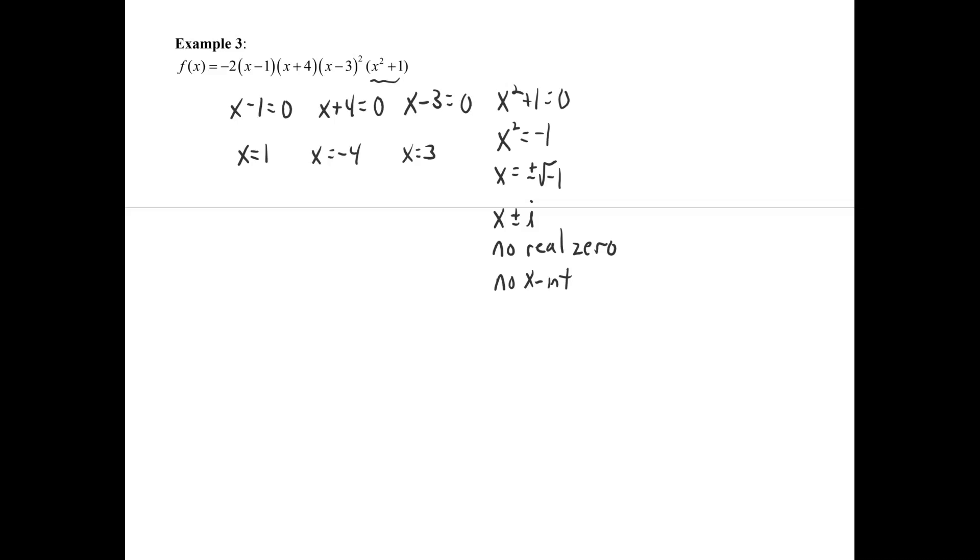Now we need to look at the multiplicity of each one of the zeros that we did find: the 1, the negative 4, and the 3. So we look at the exponents here. And this is an exponent of 1 and 1, implied exponents. So these each have a multiplicity of 1. But this x minus 3, which gave us 3 for the zero, has a multiplicity of 2.